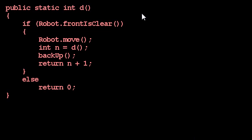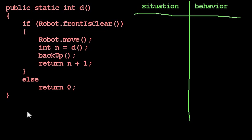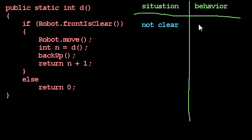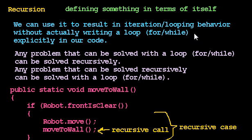Let's make a chart. What are the possible situations? I should always consider the simplest case first. This code is easiest to understand when the front is not clear — it returns zero. So if the situation is that the front is not clear, the behavior is: returns zero. Now suppose the front is clear and the robot is one step away from a wall. Let's draw that: the robot is here, the space in front is empty, and then there's a wall.